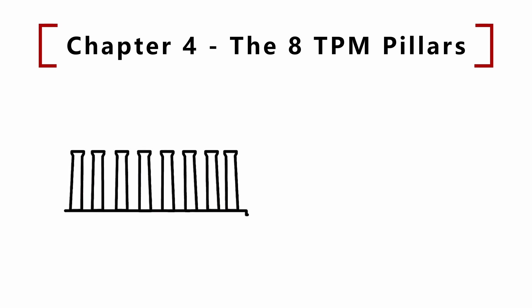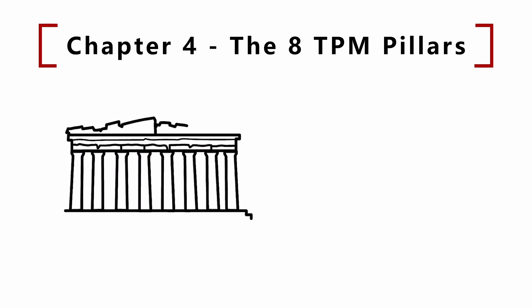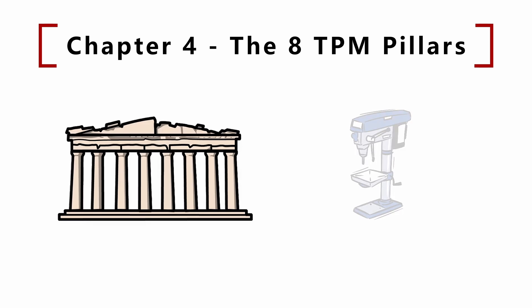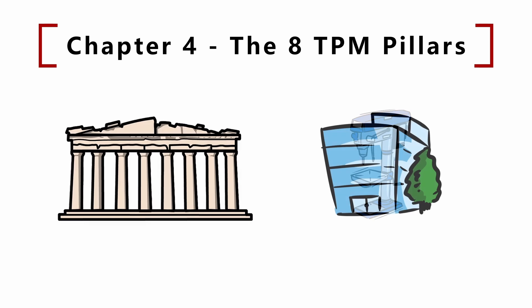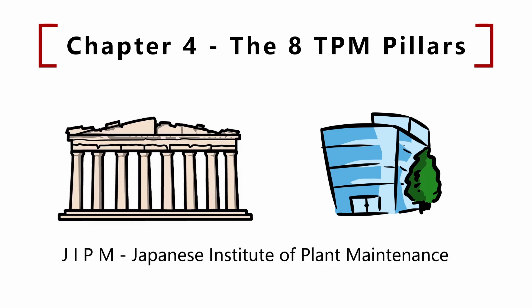In the literature, a model of TPM implementation is often proposed with the figure of a temple with eight pillars that must be built in order and in time. Following the road of the eight pillars, improvement will affect the complete organization. The sequence here follows the JIPM, Japanese Institute of Plant Maintenance.